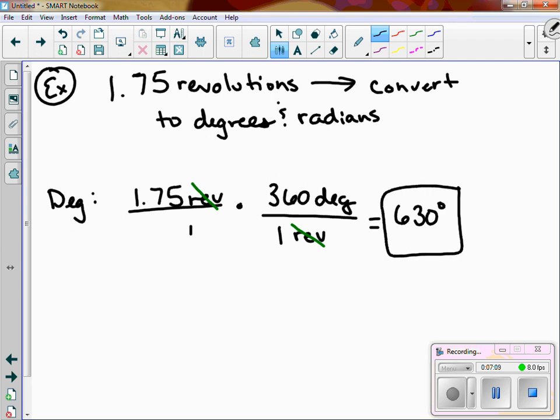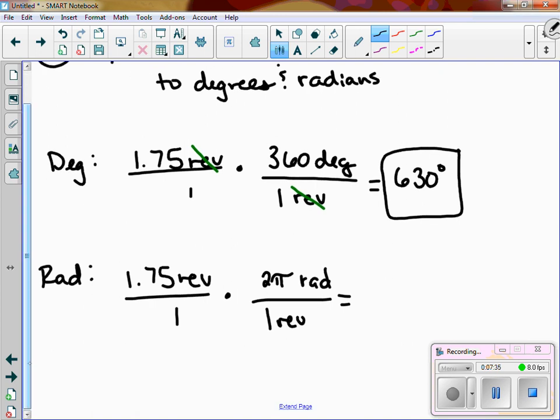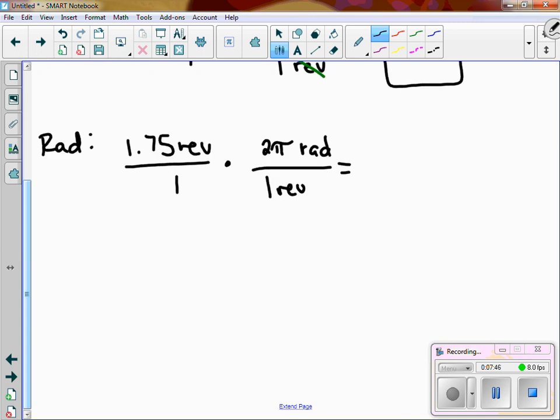All right, so now to finish this out, we're going to convert to radians. So you've got 1.75 revolutions over 1 times, 1 revolution is 2 pi radians. Going back to that definition I gave you, it goes from 0 to 2 pi. So now my revolution is canceled and I've got 1.75 times 2. Since we're dealing with radians, try not to use decimals, they don't like decimals. So technically it's 3.5 pi, but just convert that to a fraction, it's no big deal. 7 pi over 2 radians.